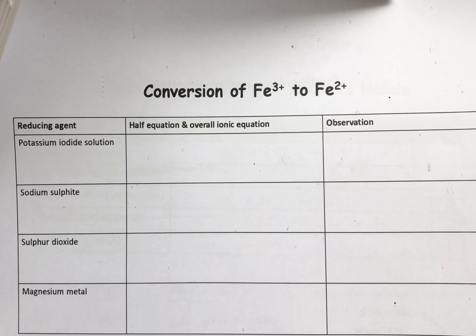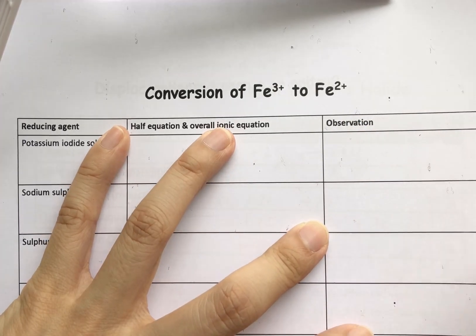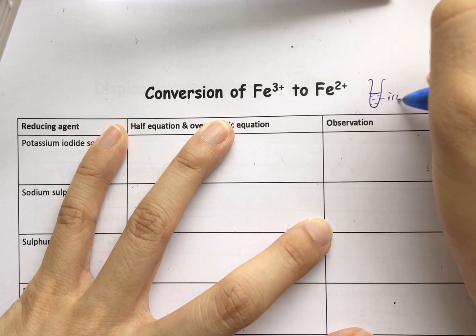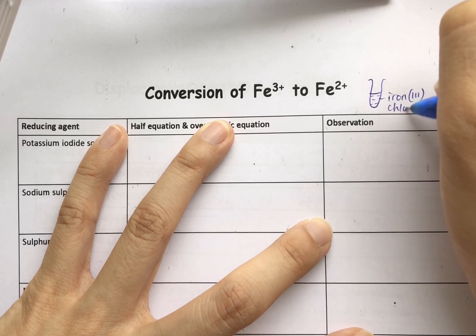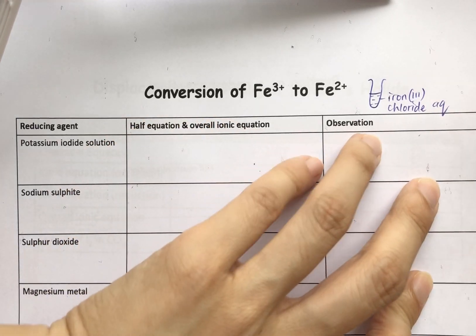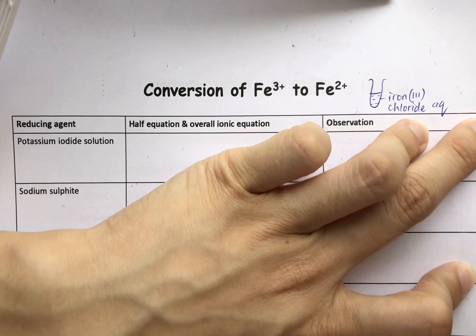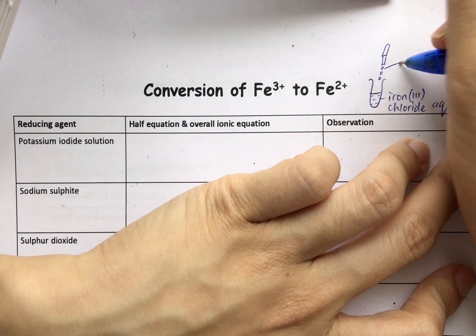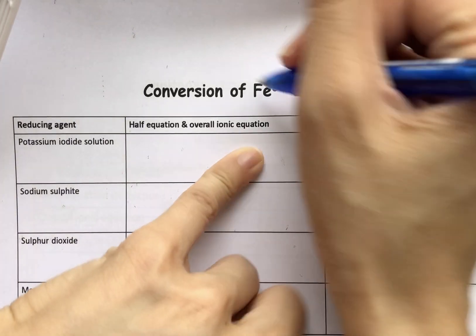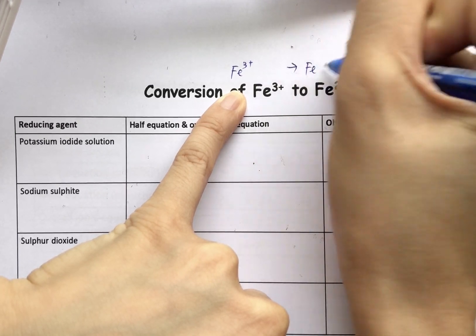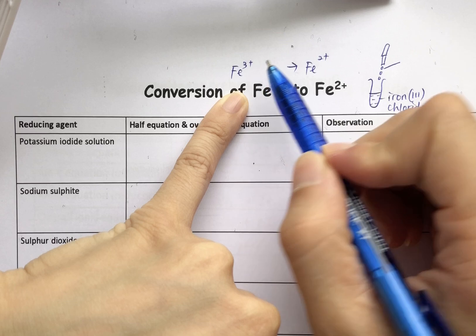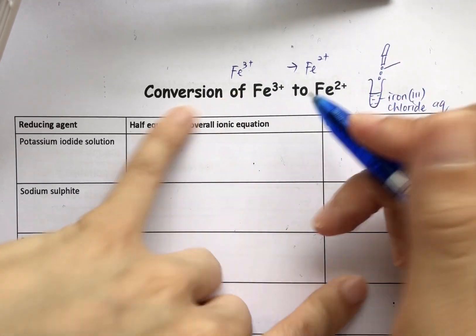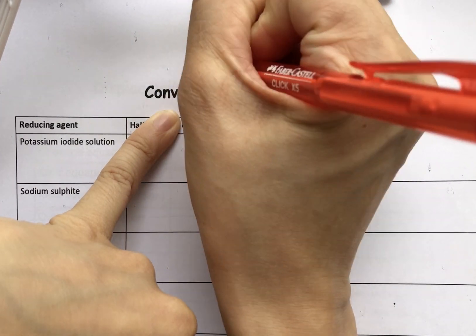Today's lesson will continue with the conversion of Fe3+ to Fe2+. If I have a solution of iron 3 chloride and want to convert it to iron 2 chloride, I need to consider what to add. Converting Fe3+ to Fe2+ is a decrease in oxidation number from 3+ to 2+, so this reaction is actually a reduction reaction.